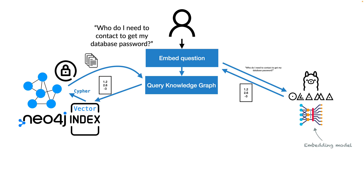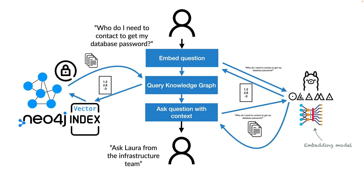This yields a set of documents related to the question the user asked. We can then augment the originally asked question with the information retrieved from the knowledge graph and send this augmented question to our large language model to get an answer based on the context we provided — based on the internal documents. For example, the LLM could answer 'ask Laura from the infrastructure team.' That's how Retrieval Augmented Generation works.